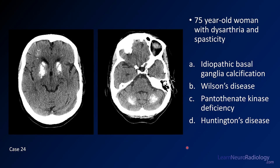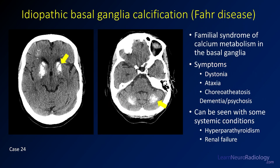Case number 24: a 75-year-old woman with dysarthria and spasticity. Two axial CT images. Choices are idiopathic basal ganglia calcification, Wilson's disease, pantothenate kinase deficiency, or Huntington's disease. The answer is idiopathic basal ganglia calcification. You see bilateral, symmetric abnormal calcification involving the corona radiata, caudate, putamen, and some posterior fossa structures. This is a condition of familial calcium accumulation predominantly in the basal ganglia — also called Fahr disease when primary. Secondary causes include renal failure or hyperparathyroidism. These patients can develop movement disorders, dementia, and psychosis.